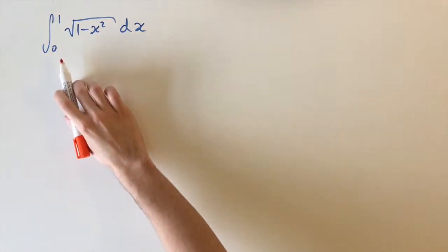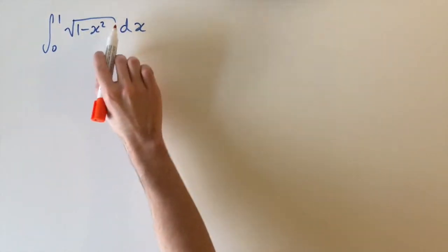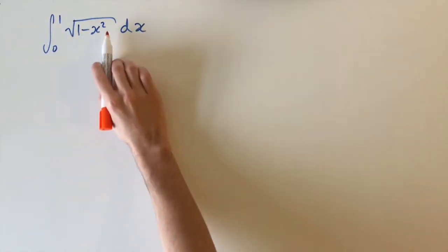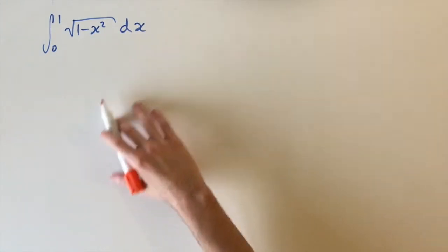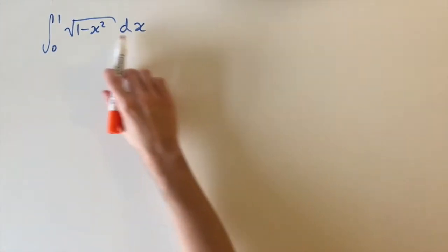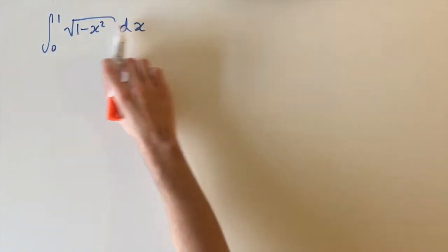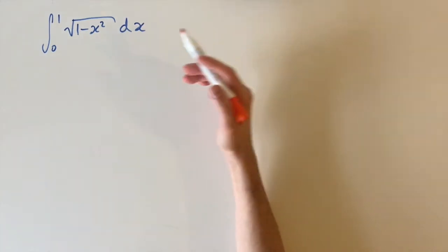We're looking at the integral between 0 and 1 of the square root of 1 minus x squared dx. This is actually quite a famous integral, and if you recognize it, you might be able to solve it in your head.